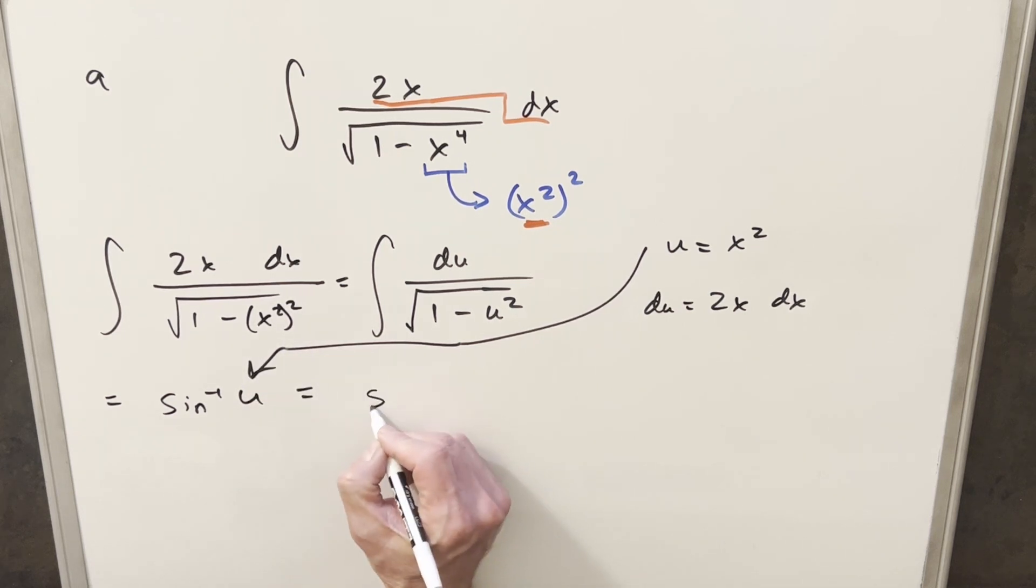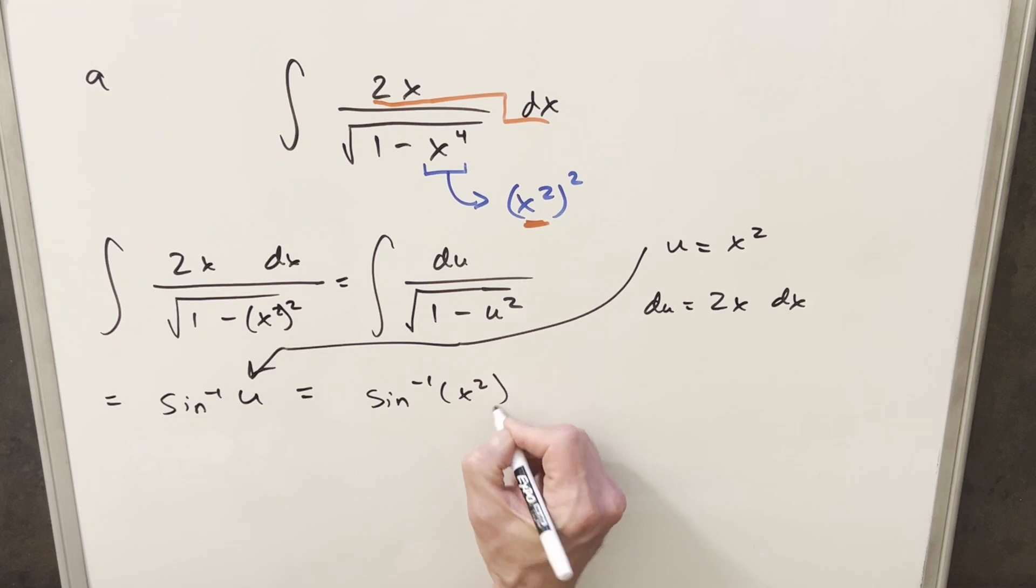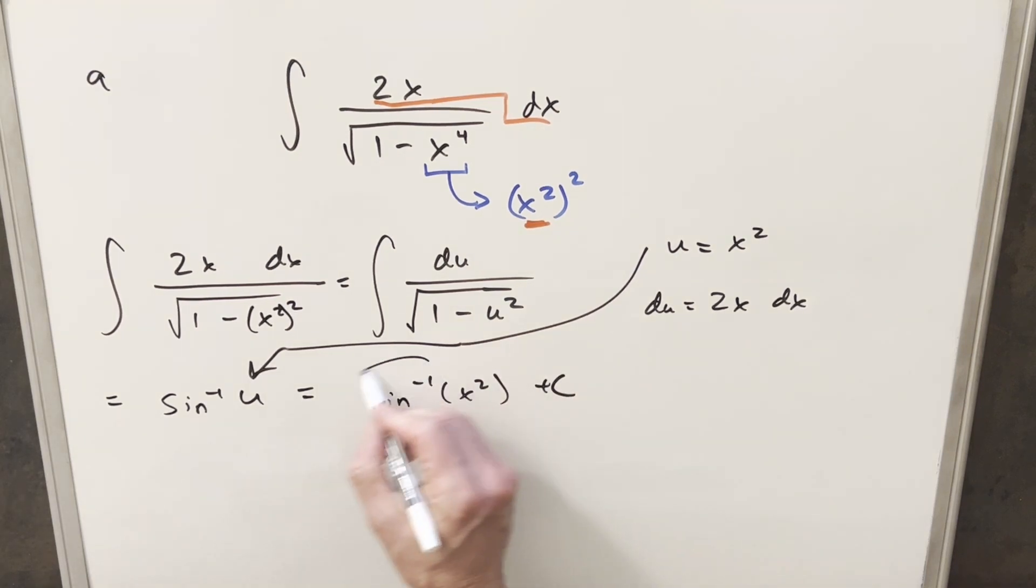For my final solution, we're just going to have arc sine x squared plus c. And that's it.